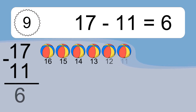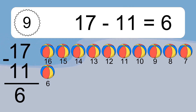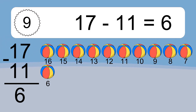17 minus 11 equals 6. Let's count it: 16, 15, 14, 13, 12, 11, 10, 9, 8, 7, 6.